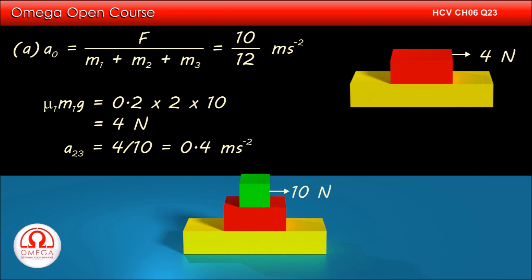Thus, the maximum possible acceleration of M2 and M3 system is less than the acceleration of all the blocks if they move together. This implies all the blocks cannot move together. If M1 and M2 are not moving together, then there is a relative slipping between the two blocks and hence the magnitude of the friction is mu times M1 times g, that is 4N.